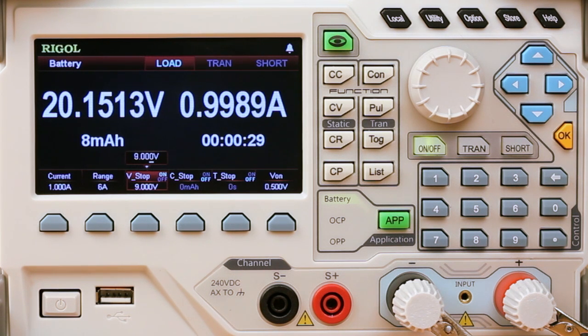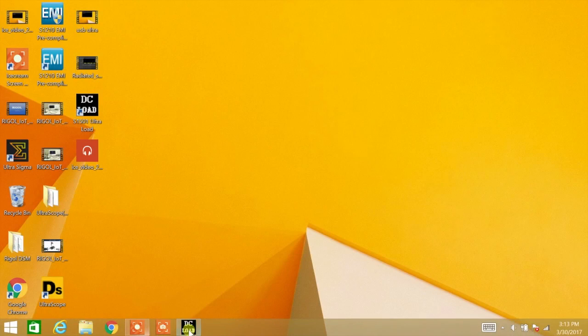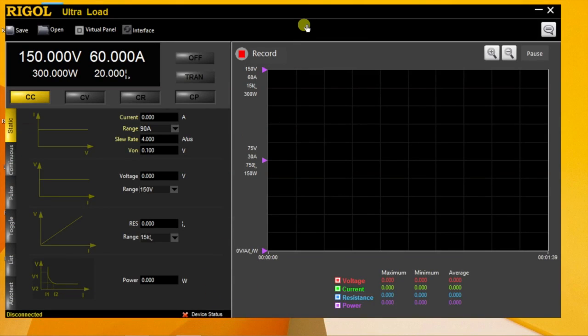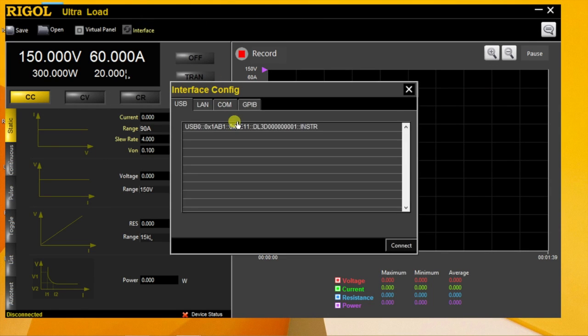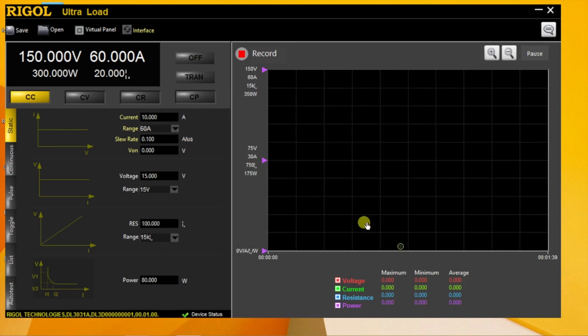Now let's look at another way to record that data. Start by opening the UltraLoad free software. From here we can connect to the instrument over USB, LAN, GPIB or RS-232. We see the 20 volts we're starting with. Since we're already set on the battery test, we can go ahead and hit the on button.